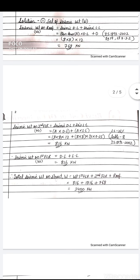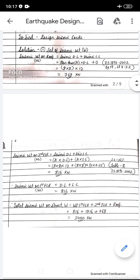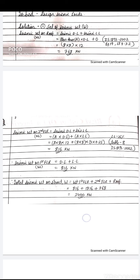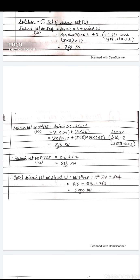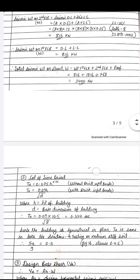The seismic weight on the second floor is 816 kN. Similarly, seismic weight on the first floor is also 816 kN. The total seismic weight on the structure is the summation of all floors: first floor + second floor + roof = 816 + 816 + 768 = 2400 kN.